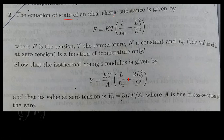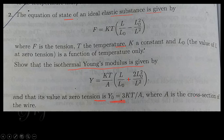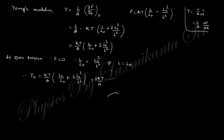The equation of state of an ideal elastic substance is given. Here F is the tension, T is the temperature, k is a constant, and l₀ is the natural length. You need to find the isothermal Young's modulus, and its value at zero tension. As discussed during the Garg Bansal Ghosh solutions, Young's modulus is written in a standard form.